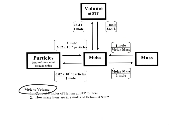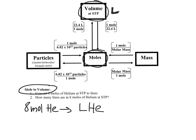Our next problem: we have 8 moles of helium gas, and we want to convert that to liters. We go from moles on the mole map to volume island, because volume is measured in liters. At STP — standard temperature and pressure — we use the conversion factor of 22.4 liters over 1 mole. Let's write down what we have: 8 moles of helium.